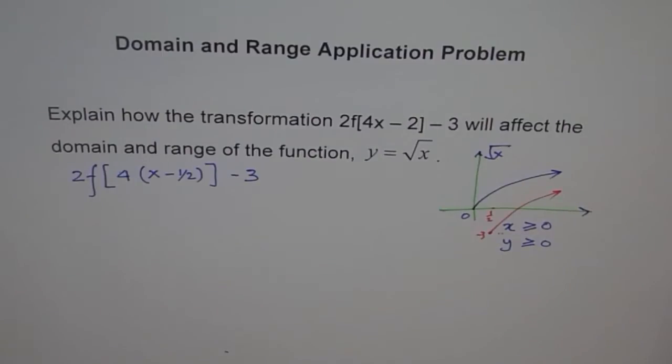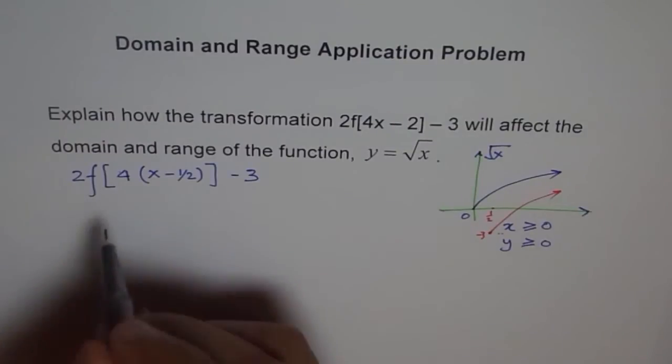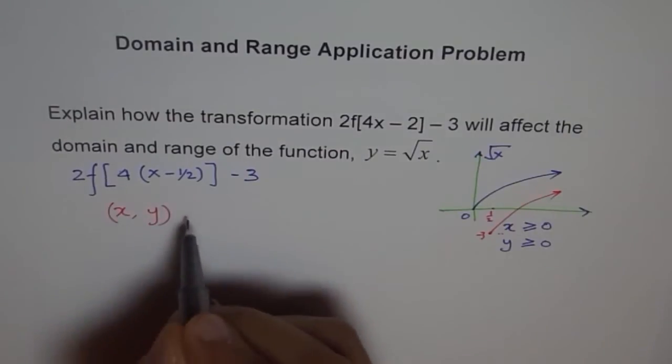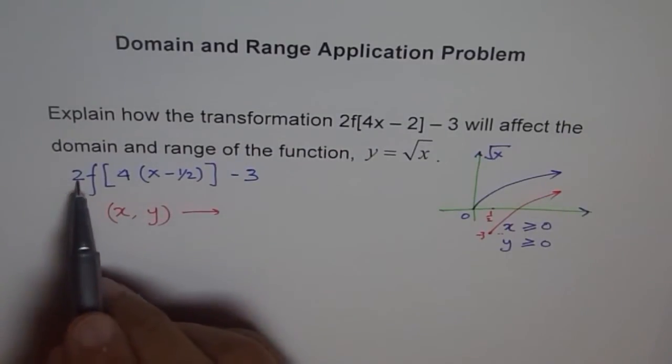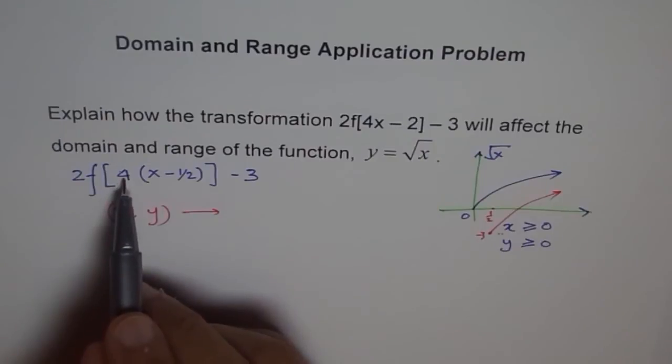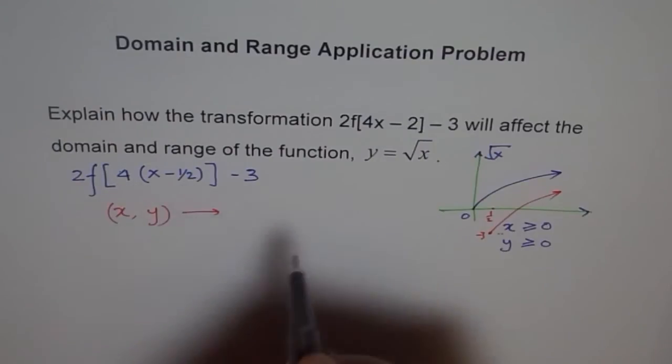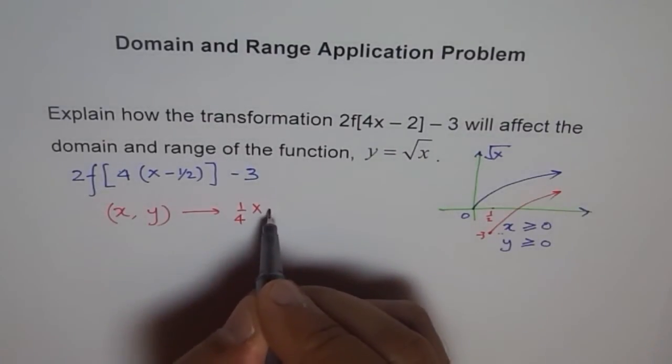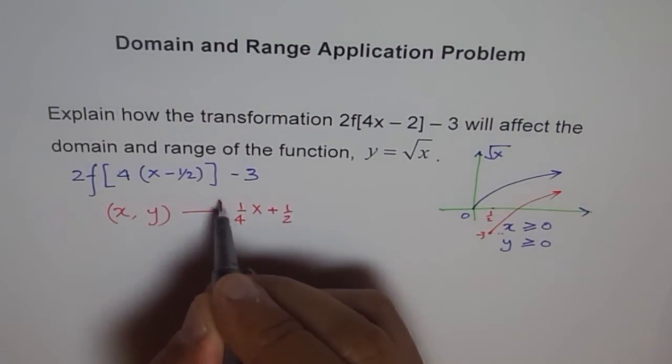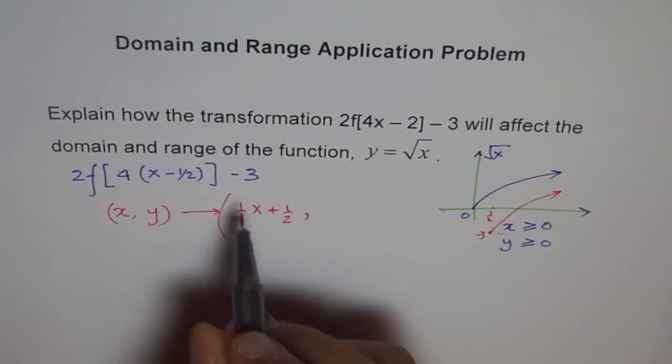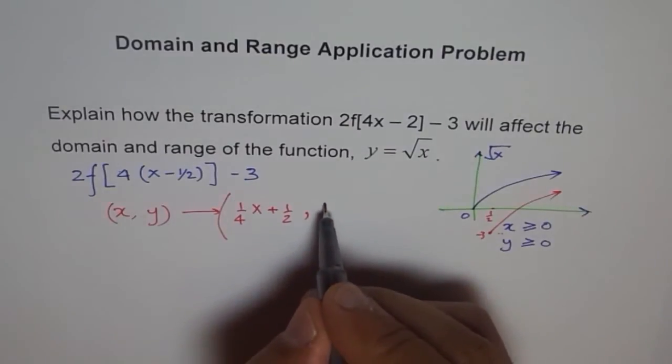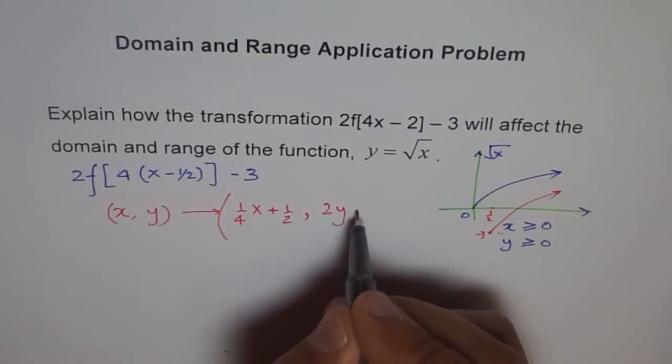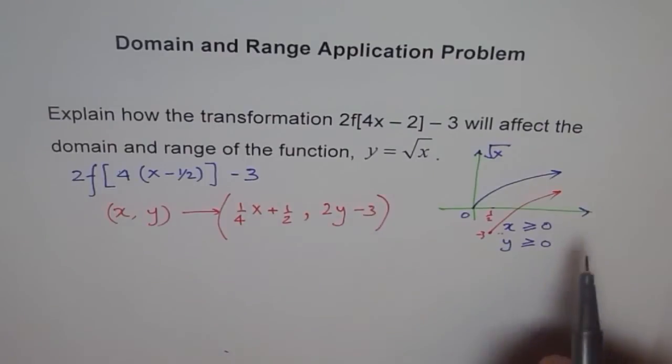Now, to appreciate it, what we can do is see how the points get transformed. So in this function, if our original points are x and y, then they get transformed to x points divided by 4 and added by half. So it becomes 1 over 4x plus half. That happens to the x points. And for the y points, they get multiplied by 2. We get 2y minus 3.